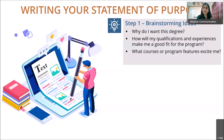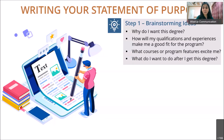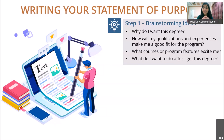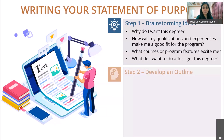The third brainstorming question is: what courses or program features excite me? Visit the university's website and review what courses and programs they offer — this shows the admissions committee you've done your research and know what you're getting into. And finally: what do I want to do after I get this degree? Think about your career goals and how this degree will help you achieve them.